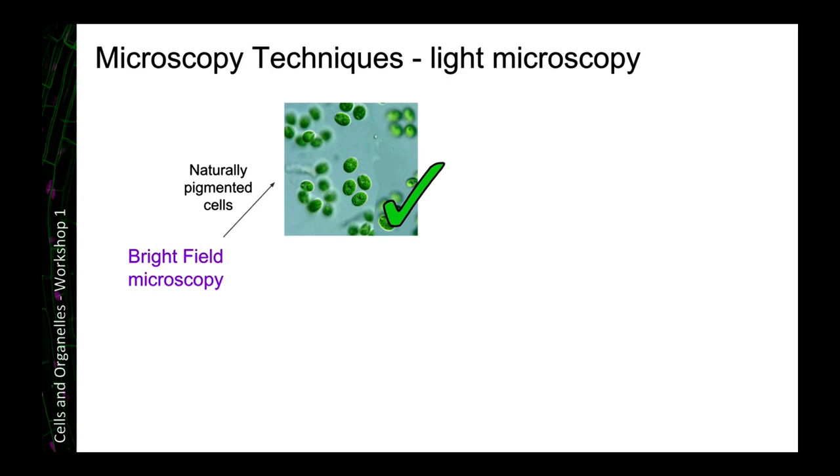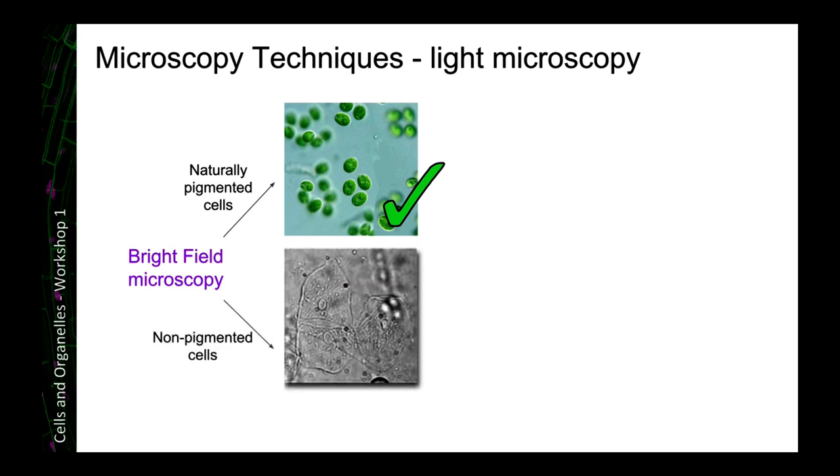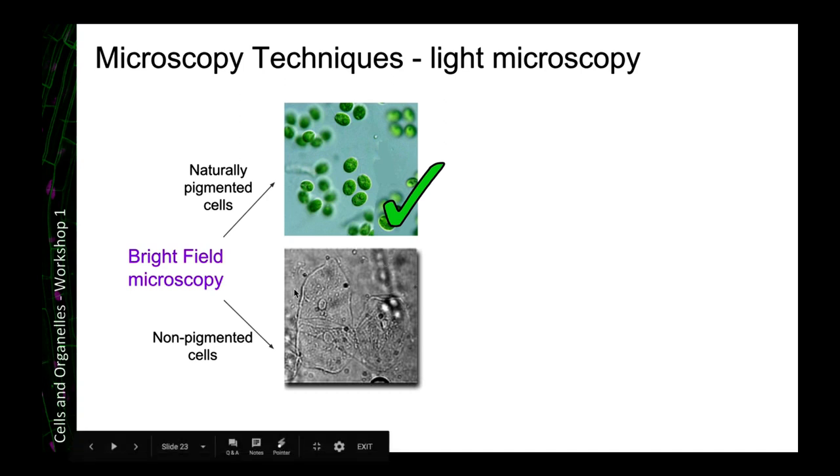However, most cells don't actually contain any natural pigment. So here we've got some human cheek cells, and there isn't anything pigmented in there. So if we put those under a standard microscope, then we can't really see that very clearly. So that's a bit of a limitation. But there are different things that we can do in order to make cells more visible.